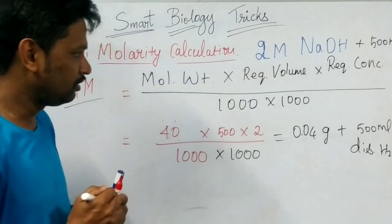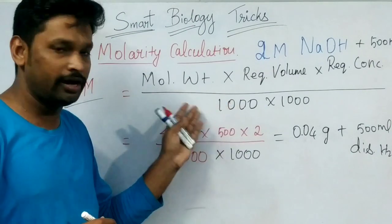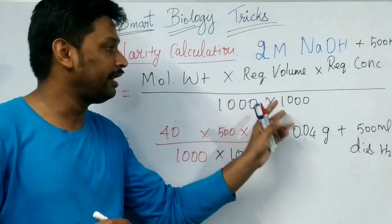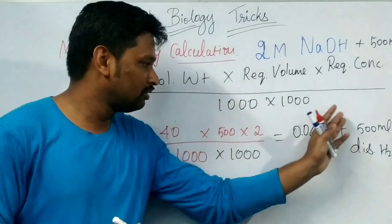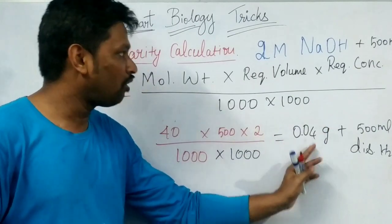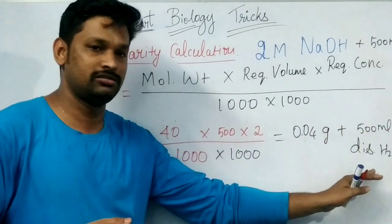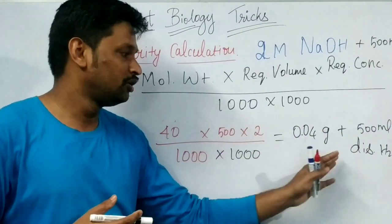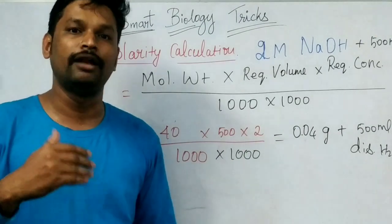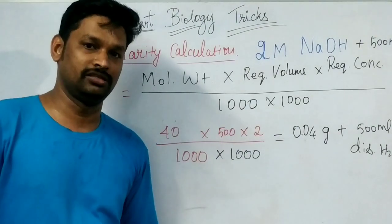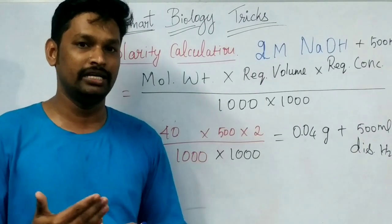It is very simple. If you know the formula of molarity calculation, for millimolarity you add another 1000, simplify the values, and you get the result. Take that amount of sodium hydroxide and dissolve with 500 ml — the required volume — of distilled water. In case of a specific solution, use that specific solution. This is how you prepare millimolar and molarity chemical preparations. Now you have understood the simple calculations of molarity and millimolar.